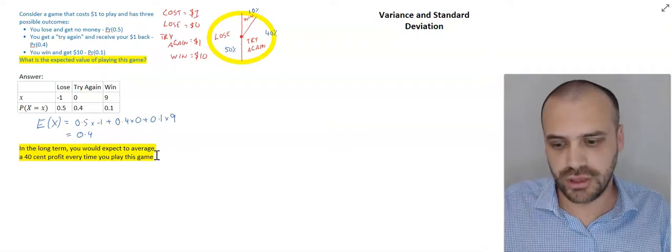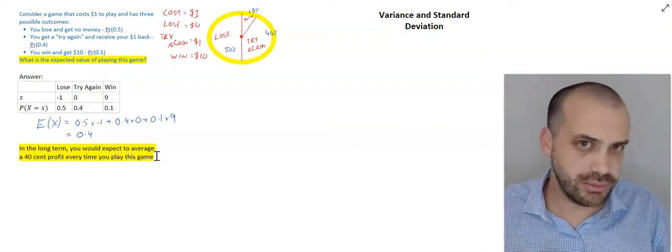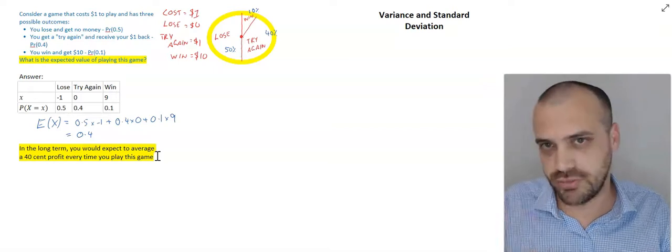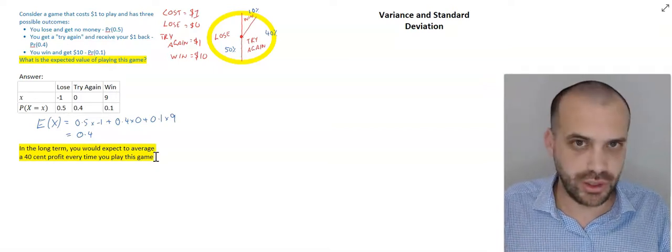Or you could win three times in a row. That's quite unlikely, but you could. And then you would walk away with a $27 profit. Because remember, you're only winning $9 each time.